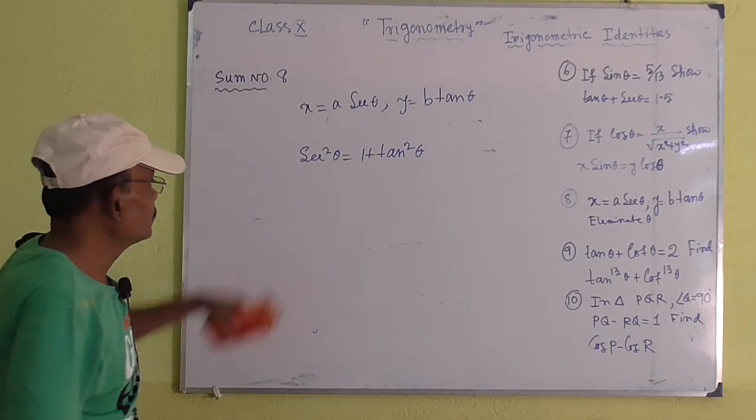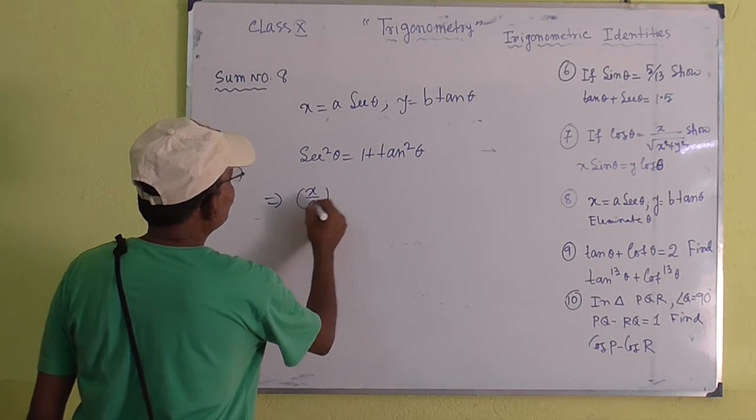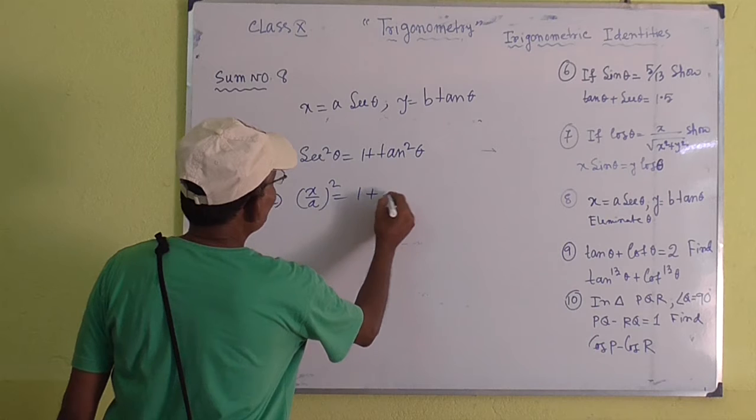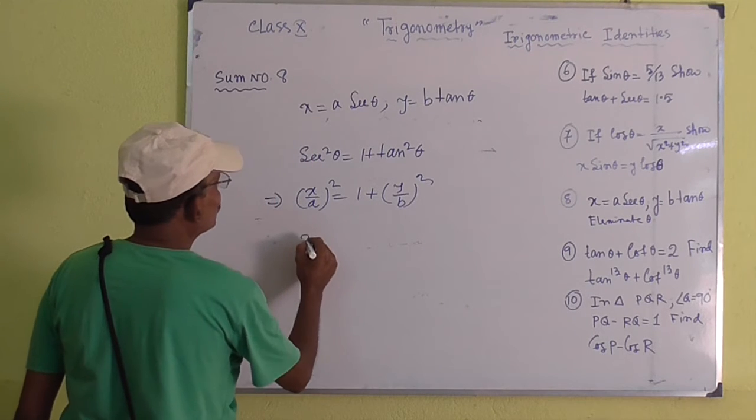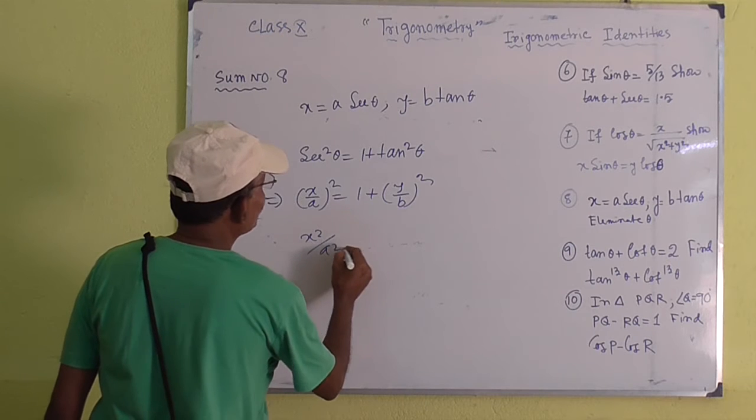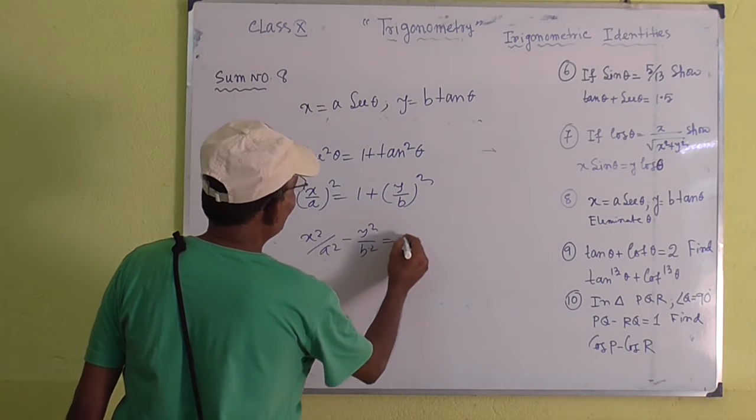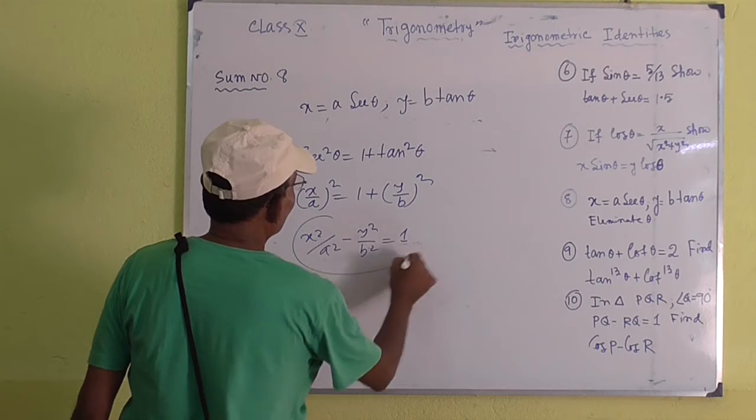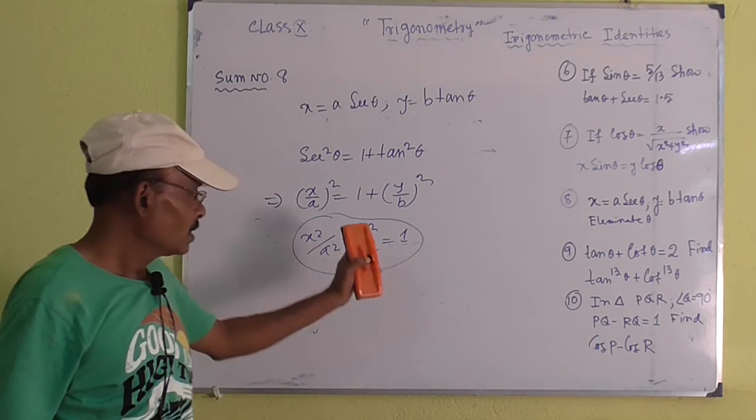So sec theta will be x by A, whole square equals 1 plus tan theta is y by B, whole square. Therefore, x square by A square minus y square by B square equals 1. Here there is no theta. Clear?